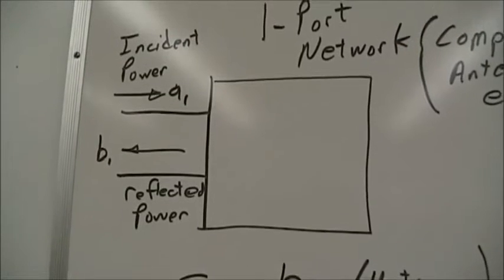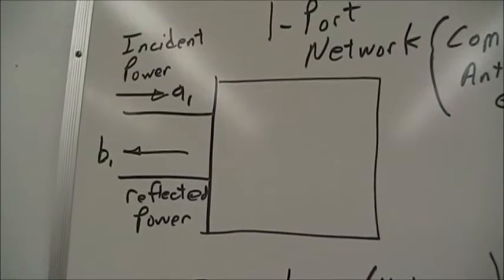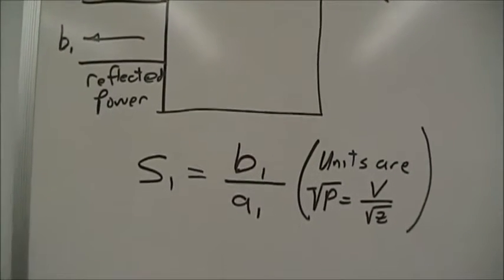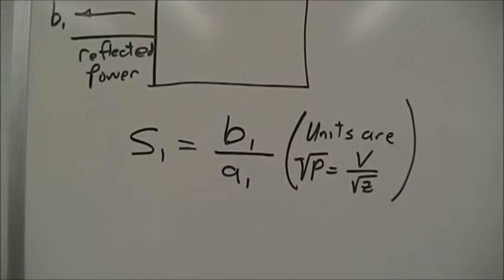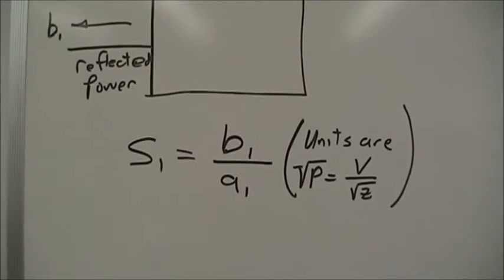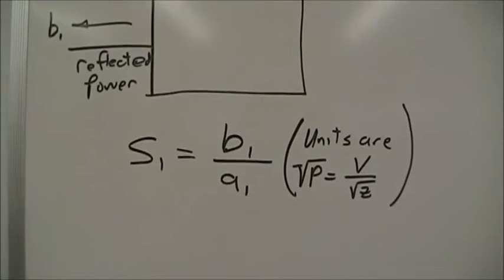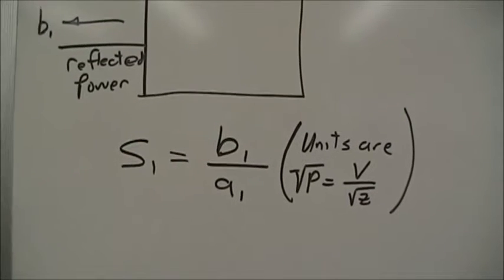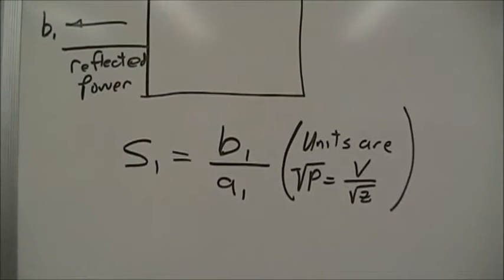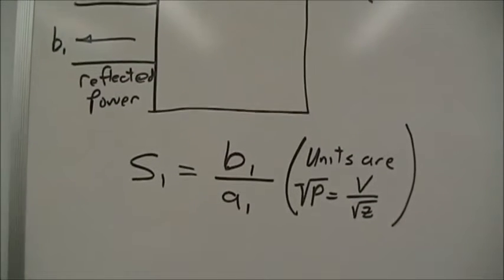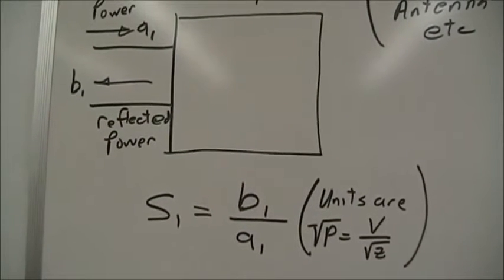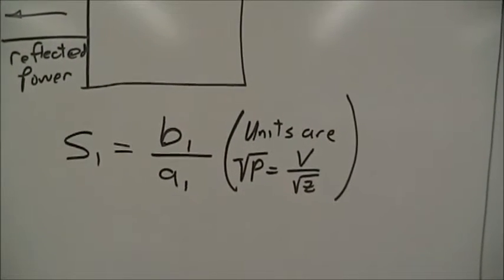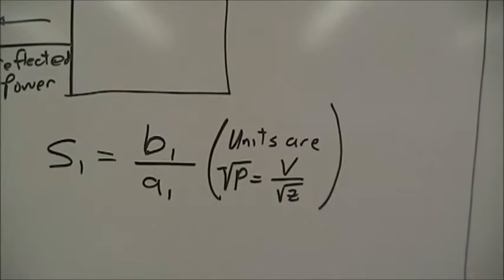The two components measured on the network analyzer are referred to as A and B, which form the scattering parameters. The scattering parameters are unique to network analyzers and rarely seen in other applications. The input scattering parameter is the ratio of B over A, or the reflected component over the incident. For a one-port network it is simply S or S1, which is B1 over A1. The units are actually the square root of power voltage over the square root of impedance.